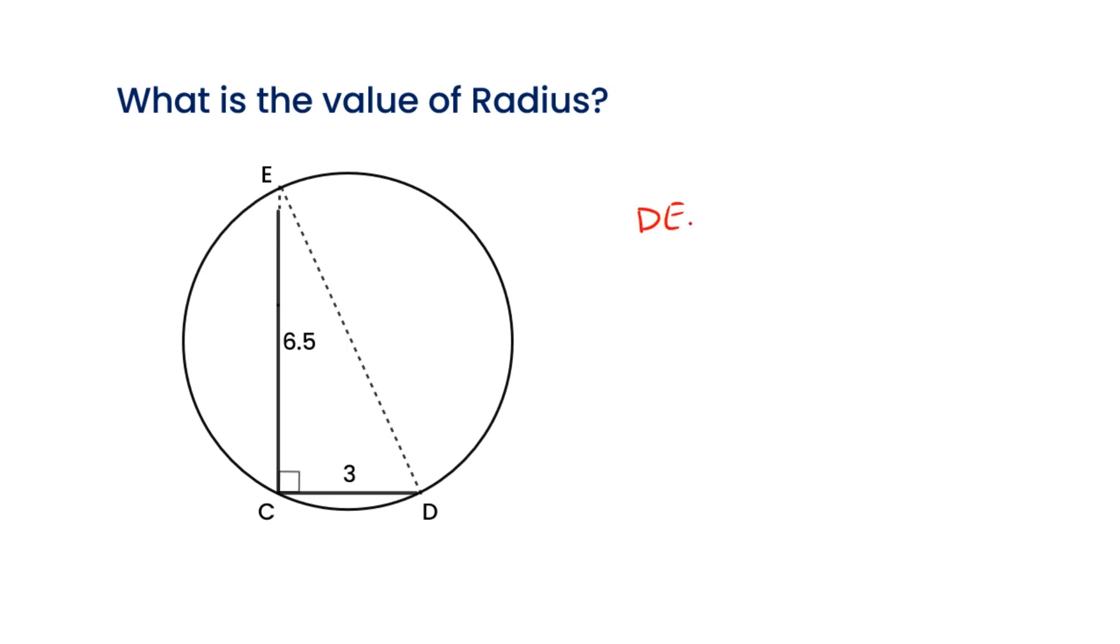DE is the diameter of the circle. DE equals 2 times the radius. So we get an equation for the radius. The radius equals 3.58.